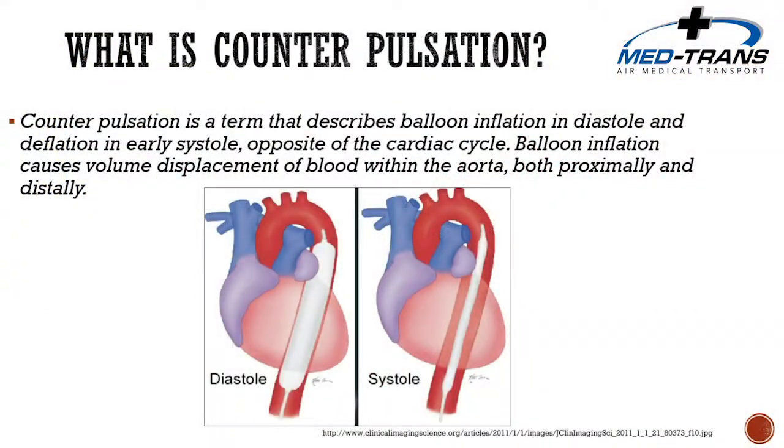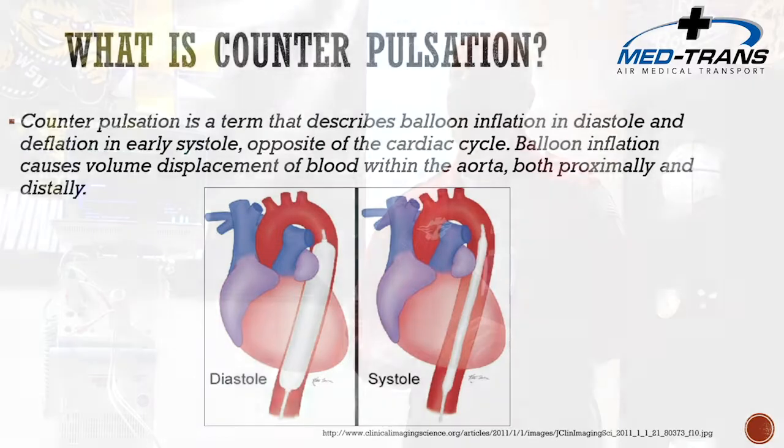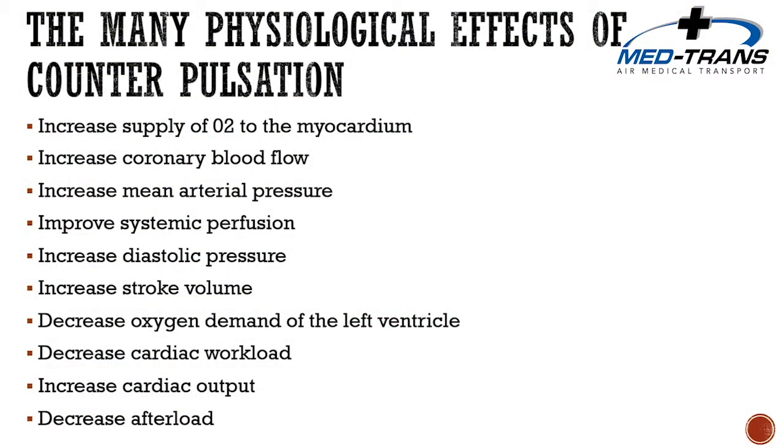Counter-pulsation describes balloon inflation during diastole and deflation in early systole, opposite the cardiac cycle. Balloon inflation causes volume displacement of blood within the aorta, both proximally and distally. Physiological effects include increased MVO2, increased coronary blood flow, mean arterial pressures, systemic perfusion, diastolic pressures, and stroke volume. It also decreases oxygen demand of the left ventricle, decreases cardiac workload, increases cardiac output, and decreases afterload.